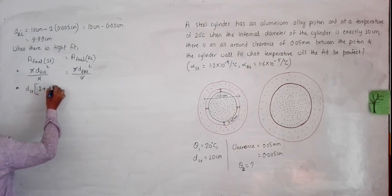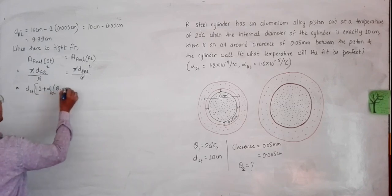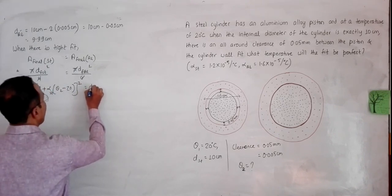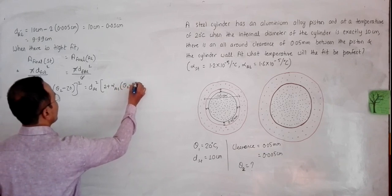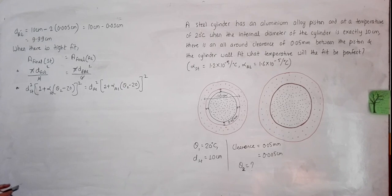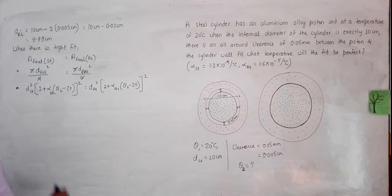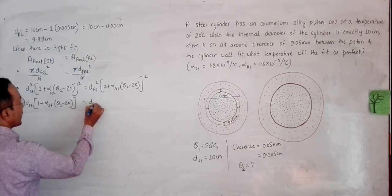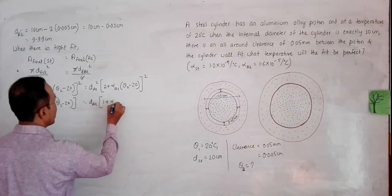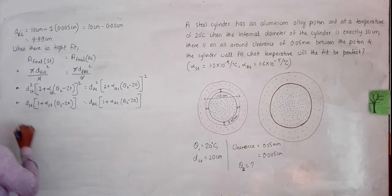Taking square roots on both sides, we get: d_steel × (1 + α_steel × (θ₂ − 20)) = d_aluminum × (1 + α_aluminum × (θ₂ − 20)). Substituting values: 10 × (1 + 1.2×10⁻⁵ × (θ₂ − 20)) = 9.99 × (1 + 1.6×10⁻⁵ × (θ₂ − 20)).